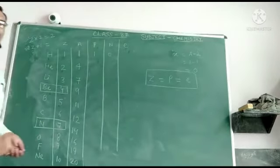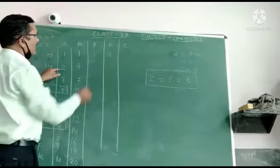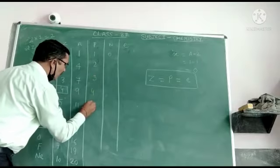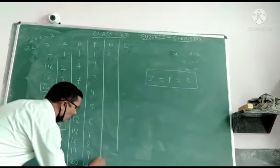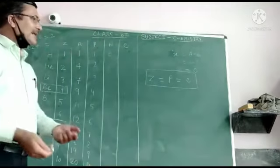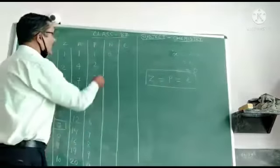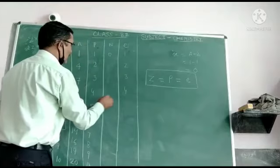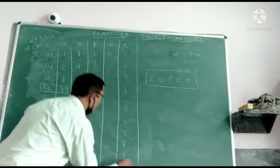Now you will find the number of protons and electrons. For atomic number, you write: 1, 2, 3, 4, 5, 6, 7, 8, 9, and 10. The number of electrons is the same as the atomic number, since atomic number equals number of protons equals number of electrons. So the number of protons is also 1, 2, 3, 4, 5, 6, 7, 8, 9, and 10.